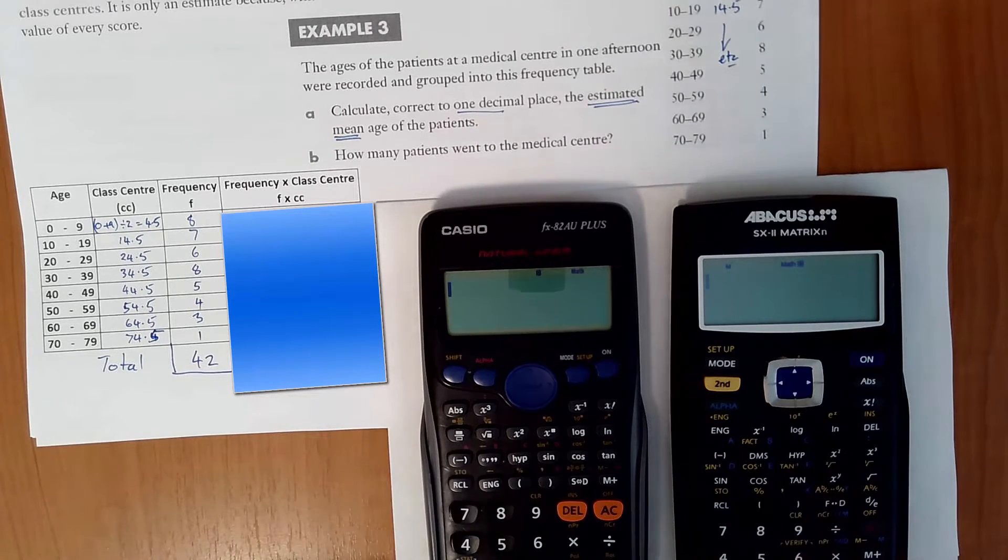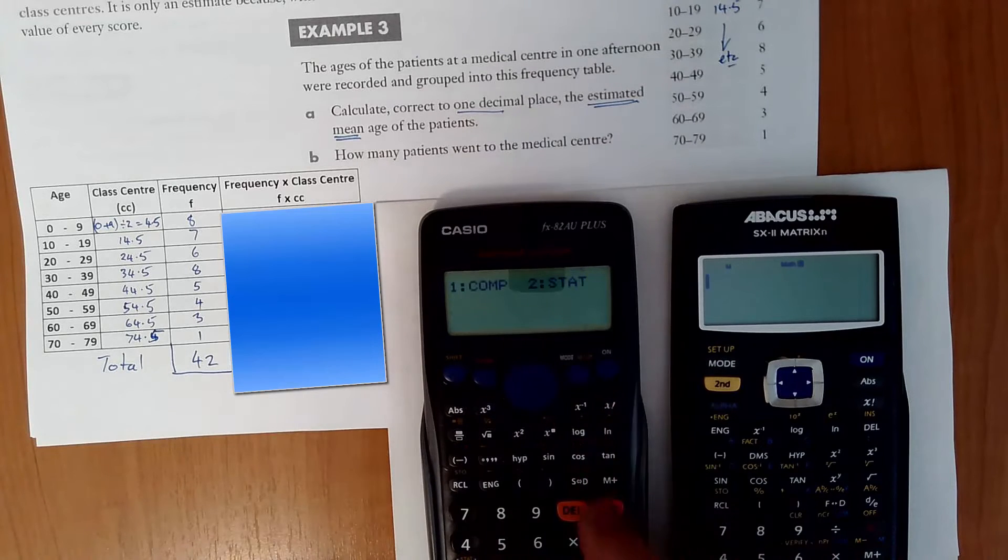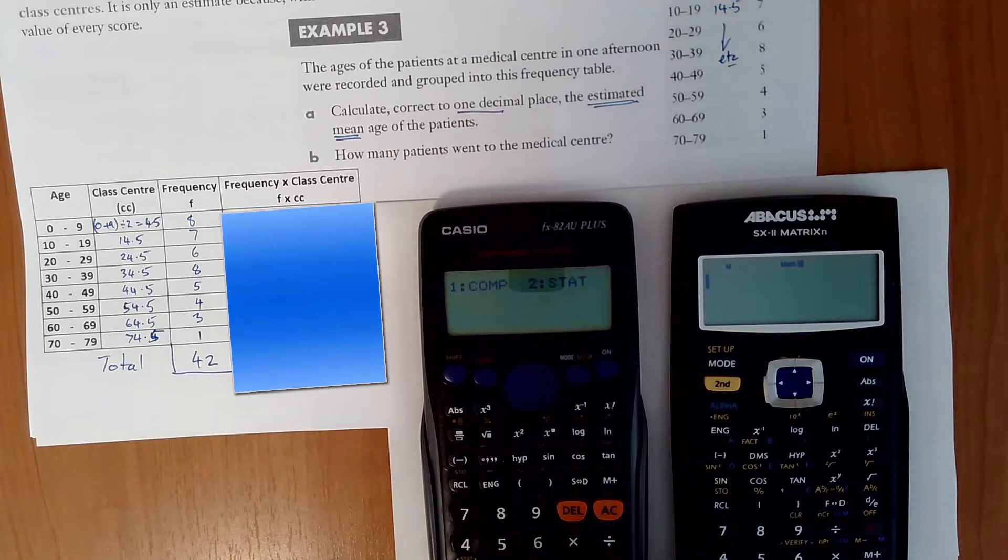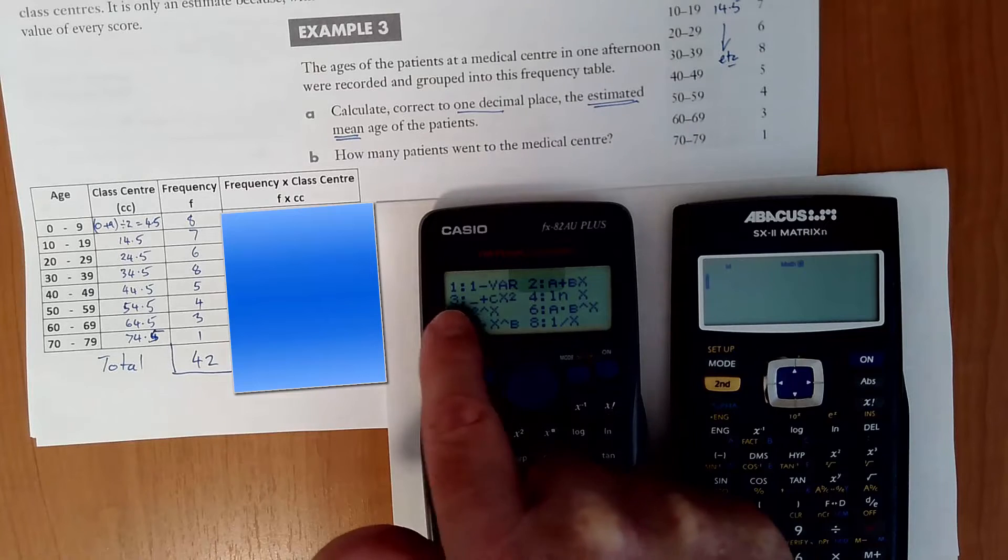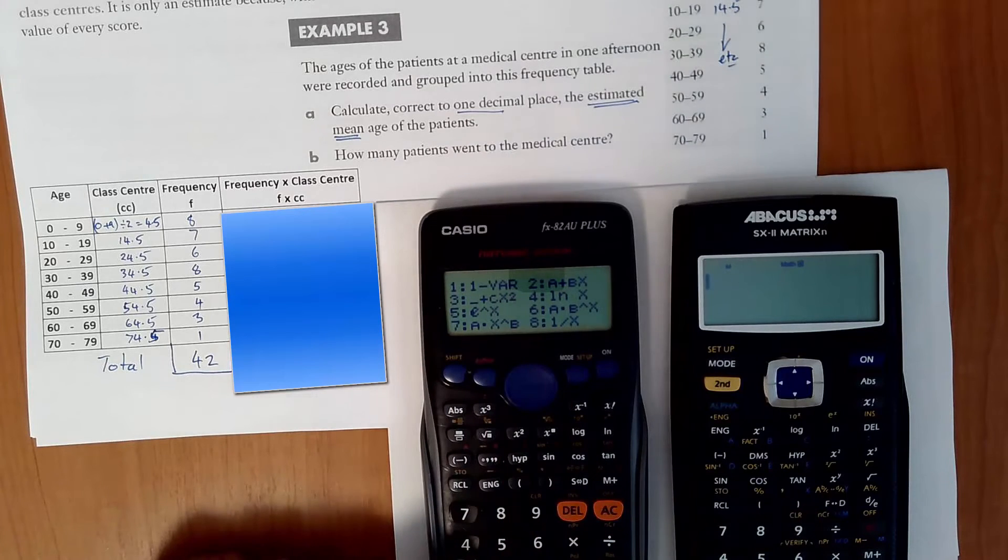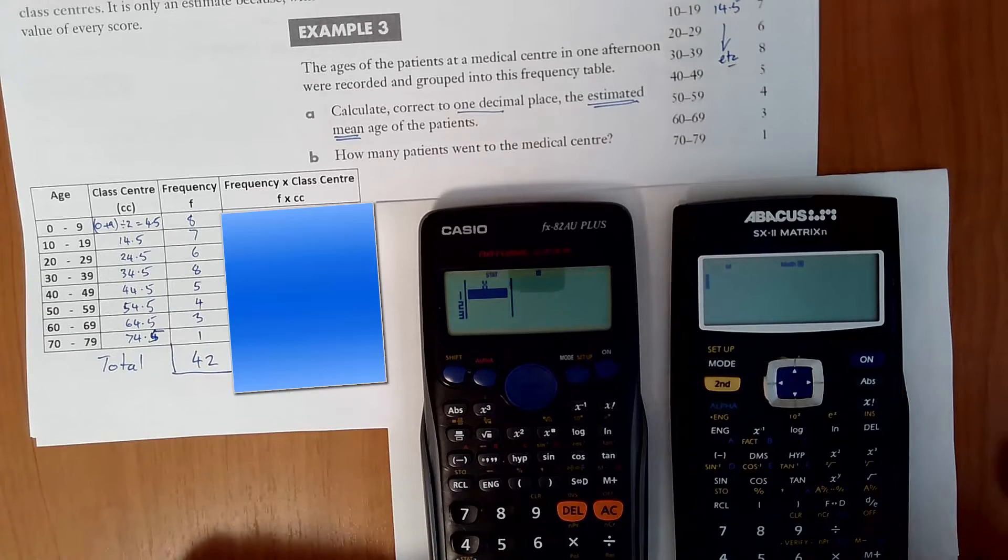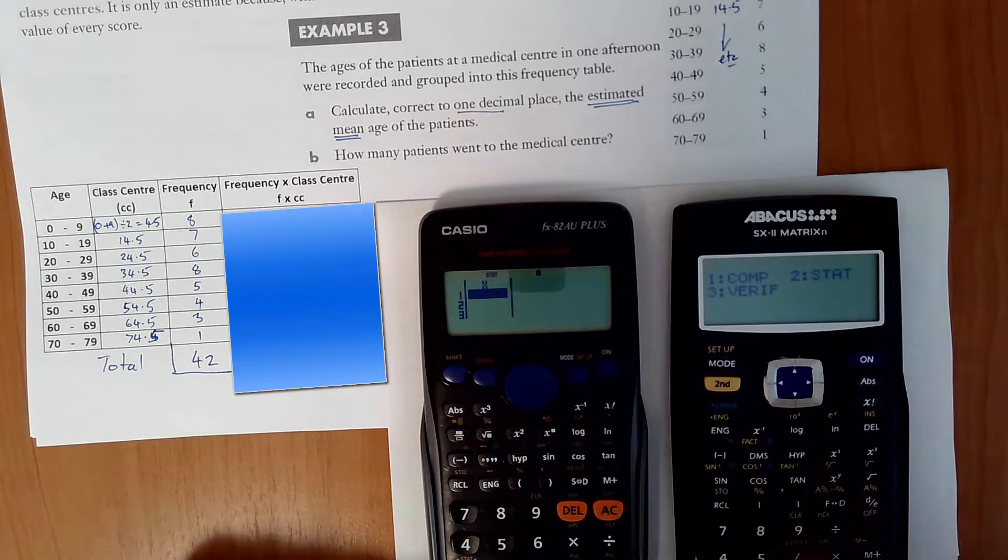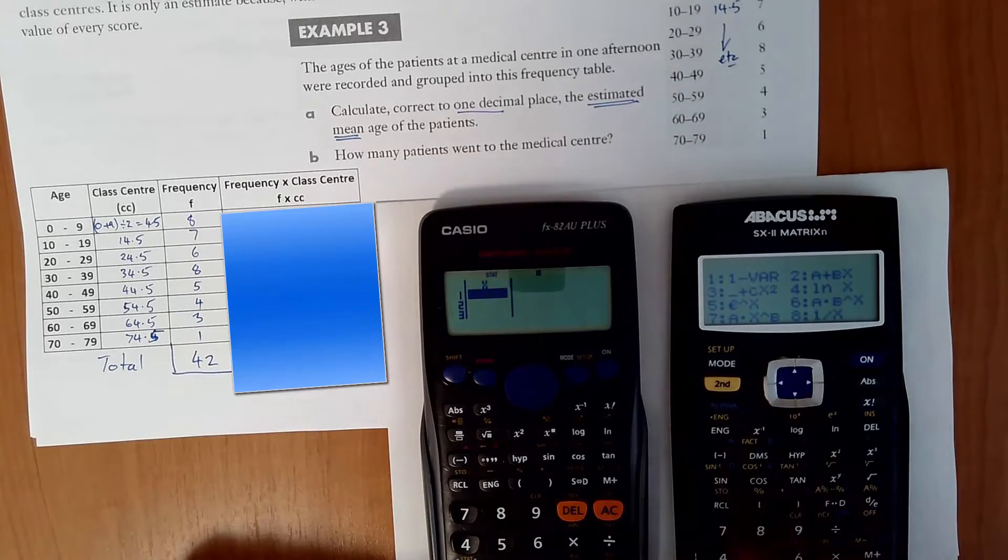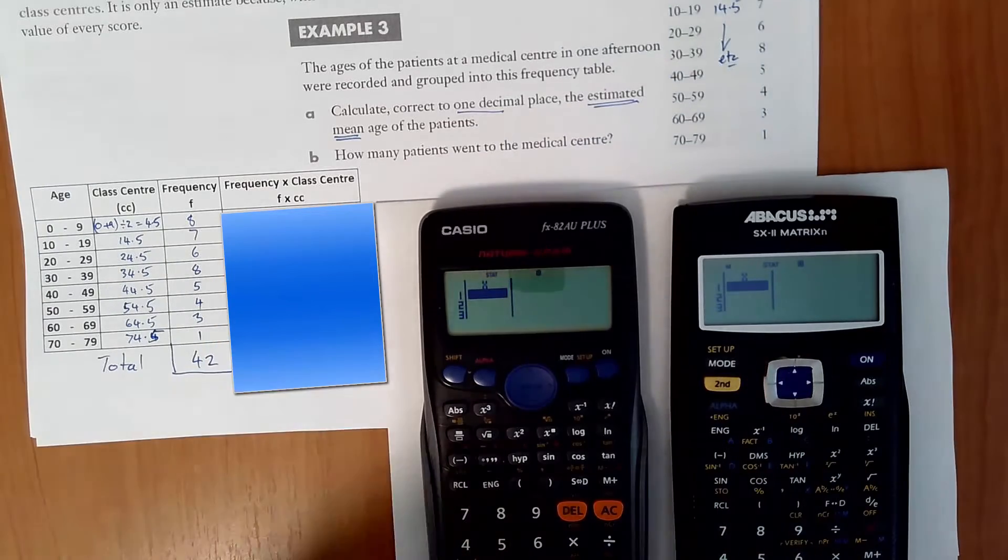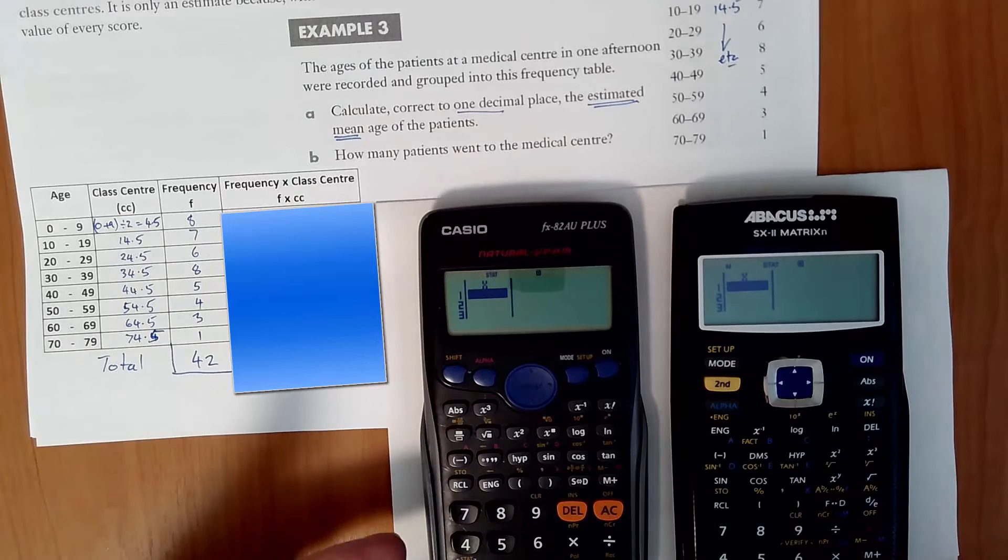Both of these calculators work in a very similar way. Press mode, number 2 for stat. In this case we're doing one variable statistics, so we press number 1 and we get that. Let's have a look at what happens on this calculator. Press mode, number 2 for statistics, number 1 for one variable the same. By default they come up like that.